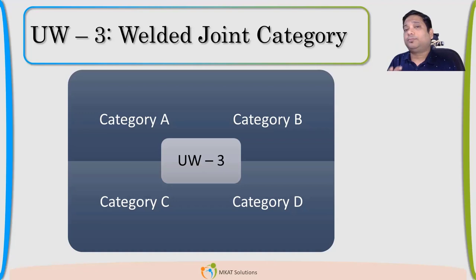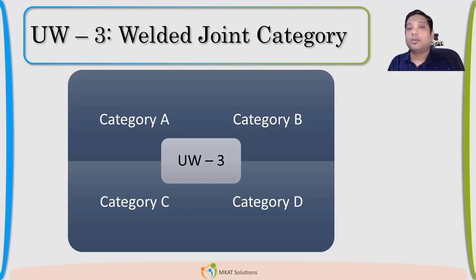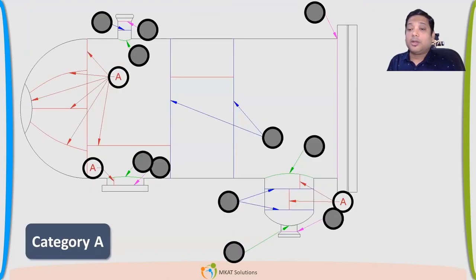The welded joints in pressure vessels are given four categories. This category is based on the location where that welded joint is located — it's not the type of joint. Please remember it's the location which is very important to decide the category of that weld. Let us see what the different categories are and how the code has divided these welds.